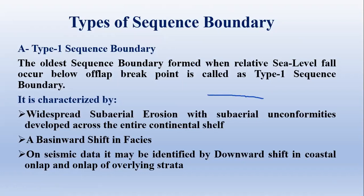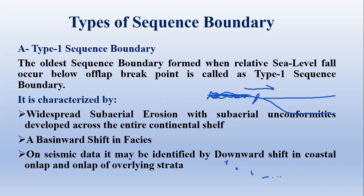Type 1 sequence boundary develops when the relative sea level fall occurs below the off-lap breakpoint. It is associated with widespread sub-aerial erosion and sub-aerial unconformity, where the unconformity develops due to erosion on the continental shelf. There is a basinward shift in facies meaning progradation occurs, with prograding strata geometries, and on seismic data it is identified by the downward shift in coastal on-lap and on-lap of overlying strata.